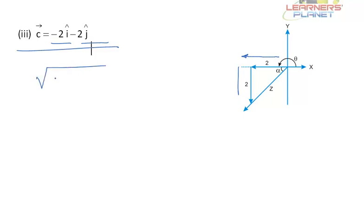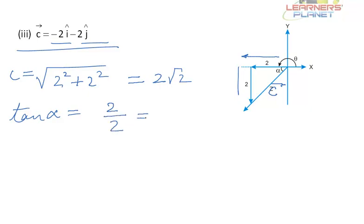So the magnitude will be given by 2 square plus 2 square which will be equal to 2 root 2. And this angle alpha as shown in the figure that the c vector makes will be equal to 2 by 2 which is 1, so alpha is 45 degrees.